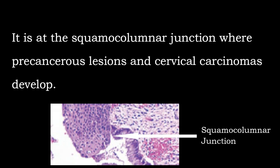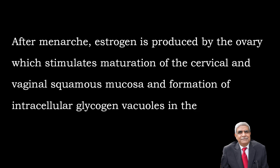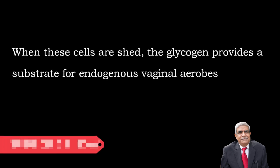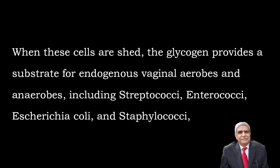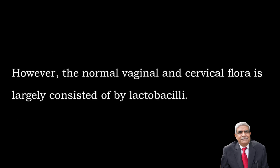It is at the squamocolumnar junction where precancerous lesions and cervical carcinomas develop. After menarche, estrogen produced by the ovary stimulates maturation of cervical and vaginal squamous mucosa and formation of intracellular glycogen vacuoles in the squamous cells. When these cells are shed, the glycogen provides a substrate for endogenous vaginal aerobes or anaerobes, which include streptococci, enterococci, and E. coli. The normal vaginal and cervical flora consists largely of lactobacilli.